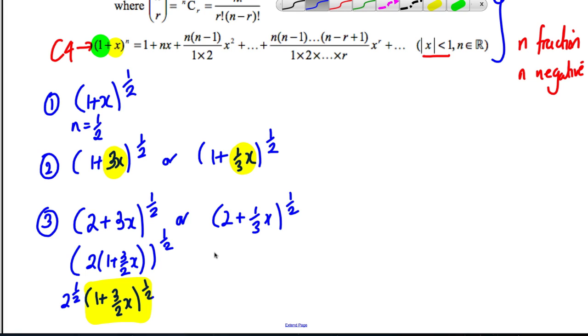Similarly here, you would factorize out a 2 and you would have 1+X/6. Again you would have 2^(1/2) × (1+X/6)^(1/2) and you'd have it in the right form so you can expand that binomially.